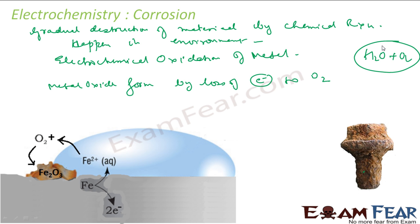Remember, we have done an experiment where we have taken three test tubes. In one test tube we kept only water and iron, and sealed that with oil so it had only water. In one test tube we kept only oxygen. And in one test tube we kept oxygen and water with nails. We saw that only the one which had both oxygen and water got corroded. So that means oxygen and water both are required for corrosion.